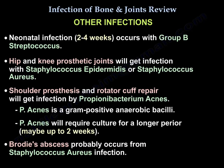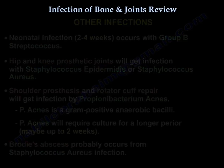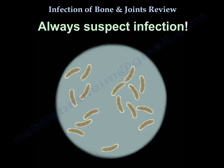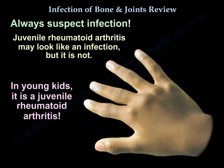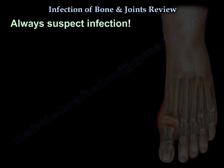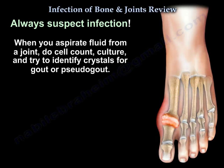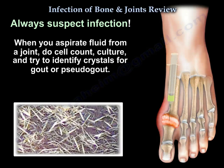Other notable infections: newborns get infection at 2 to 4 weeks with group B Streptococcus, typically involving the hips and knees. Prosthetic joints get infected with Staph epidermidis or Staph aureus. Shoulder prostheses and rotator cuff repairs are prone to infection by Propionibacterium acnes — a gram-positive anaerobic bacillus that requires culture for up to two weeks. Brodie's abscess is probably caused by Staph aureus. In young children, juvenile rheumatoid arthritis may look like an infection but is not. When aspirating fluid from a joint, perform a cell count, culture, and identify crystals for gout or pseudogout.